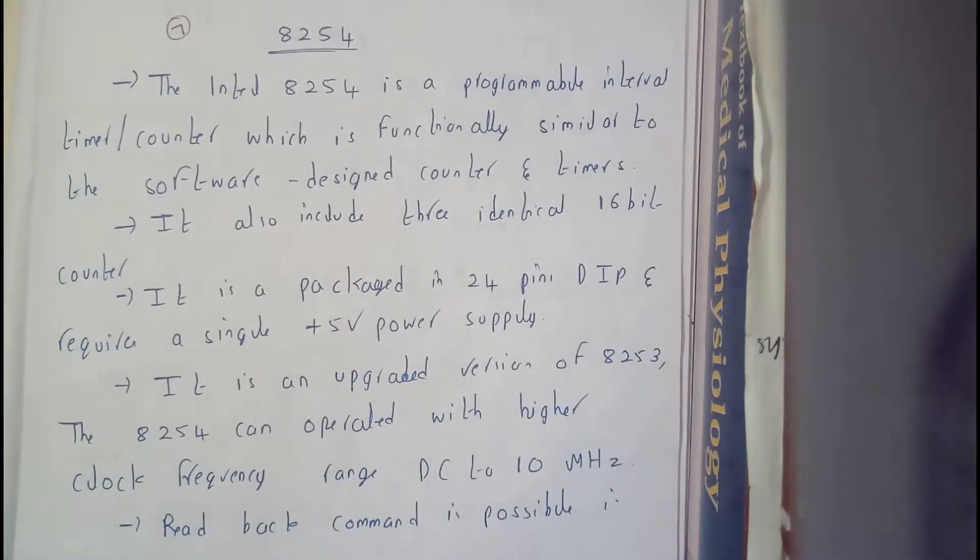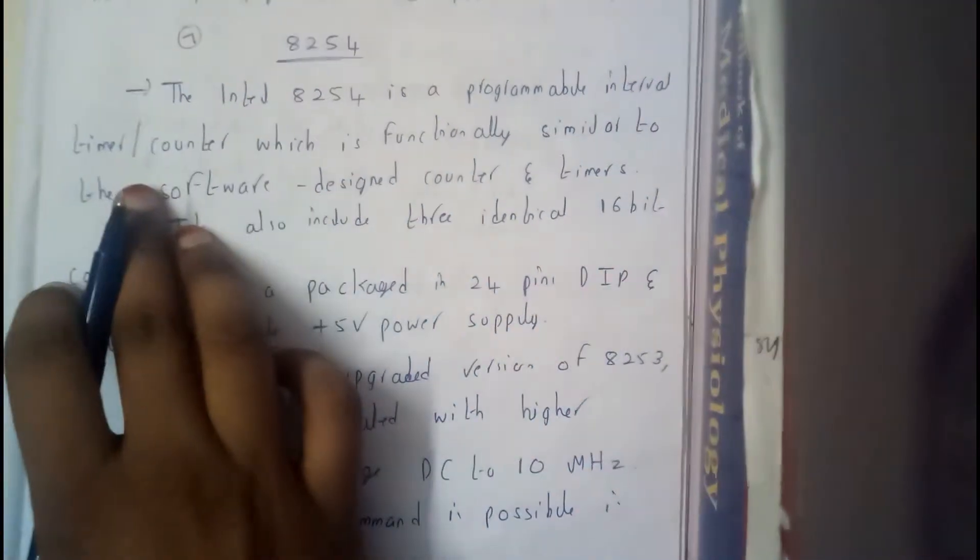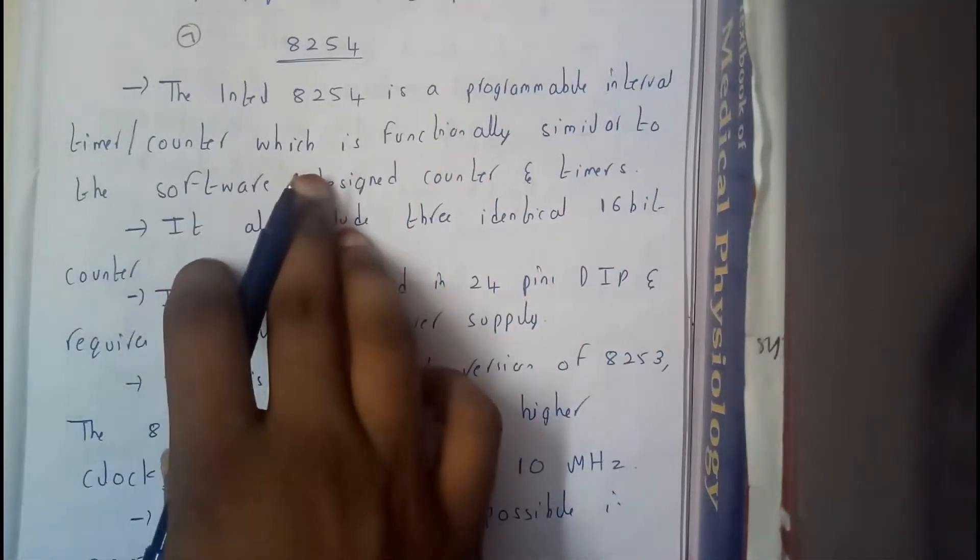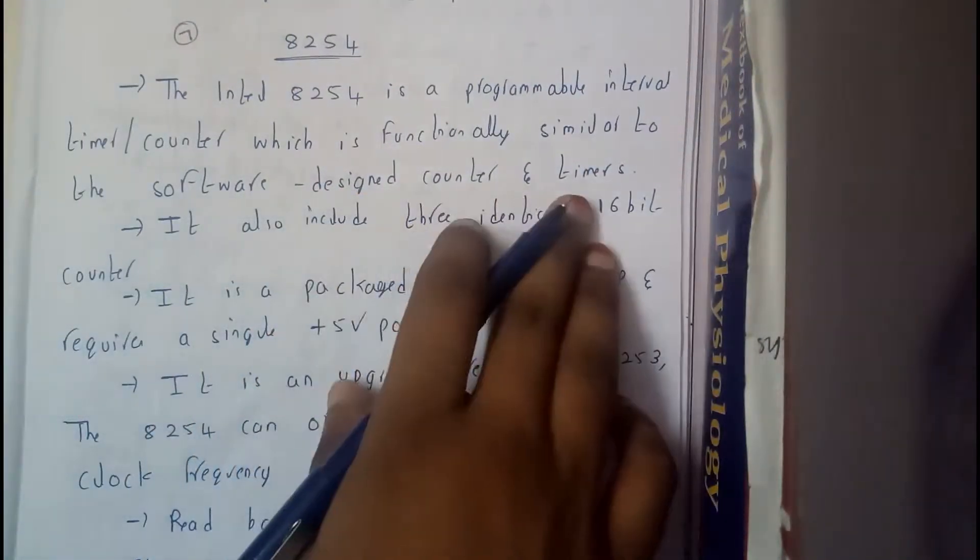Hello guys we are back with our next tutorial. In this tutorial let us go through 8254. So the Intel 8254 is a programmable interval timer slash counter which is functionally similar to the software designed counter and timer.